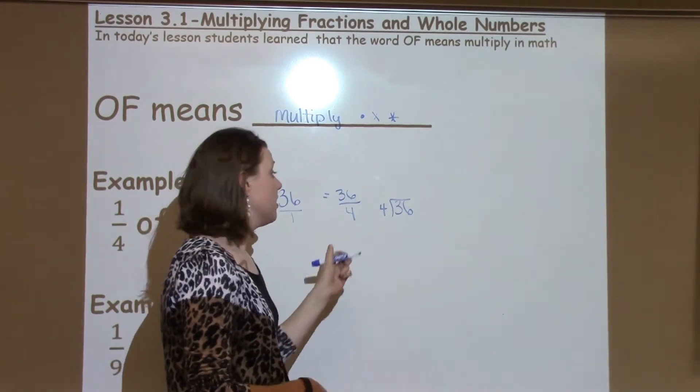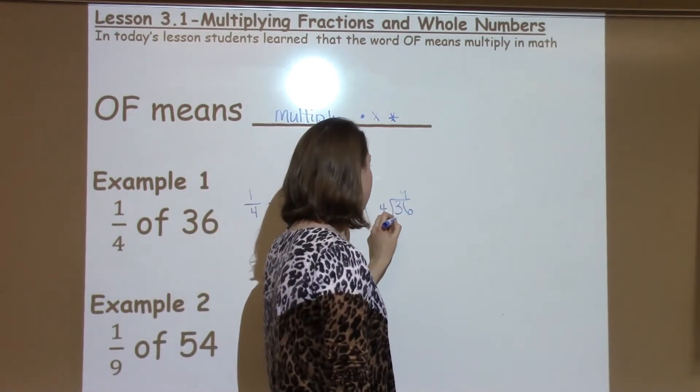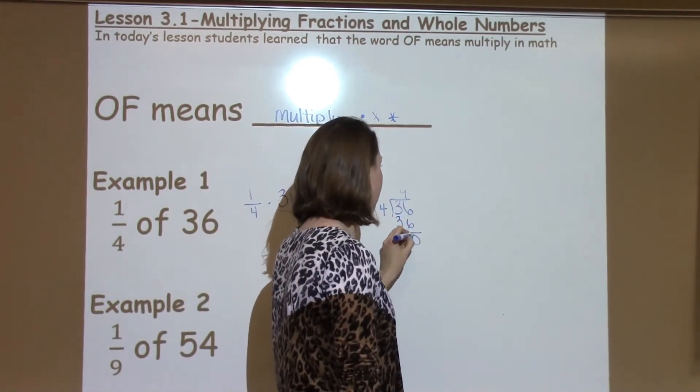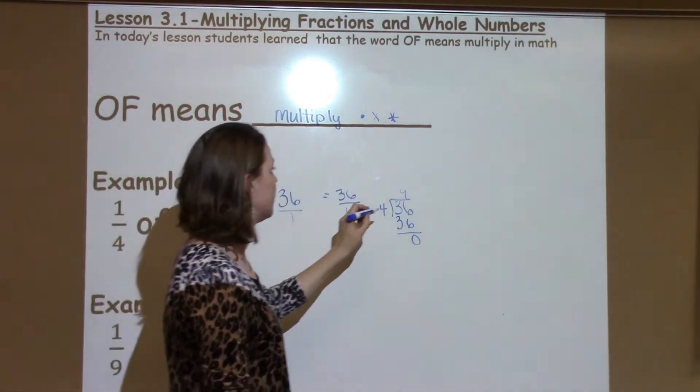I know I can count by 4 to get to 36, which is 9. 9 times 4 is 36 with nothing left over. So I know 1 fourth of 36 is 9.